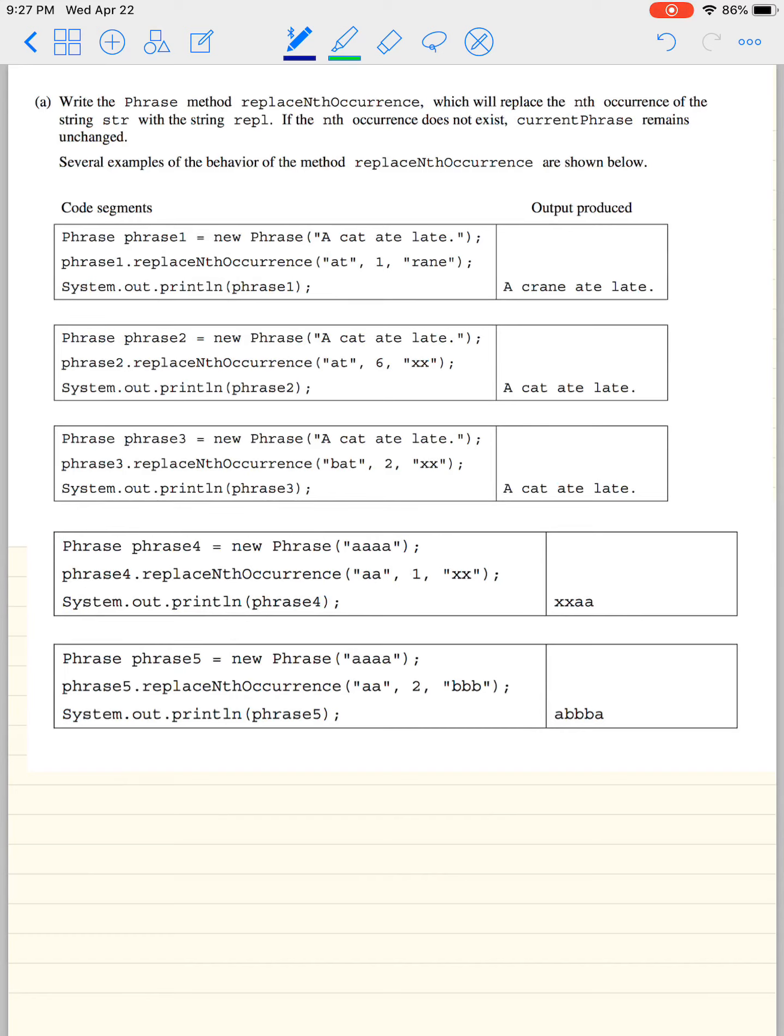So in this problem, they say, in part A rather, write the phrase method replaceNthOccurrence, which will replace the nth occurrence of the string str with repl. If the nth occurrence does not exist, the current phrase remains unchanged.